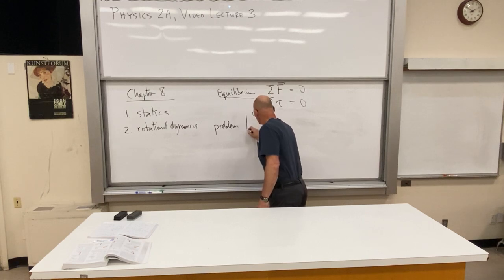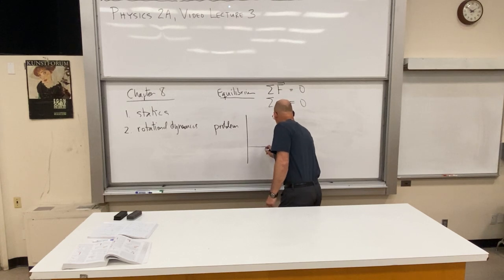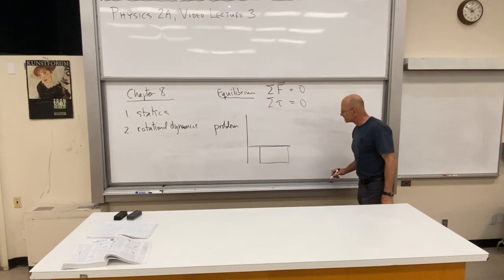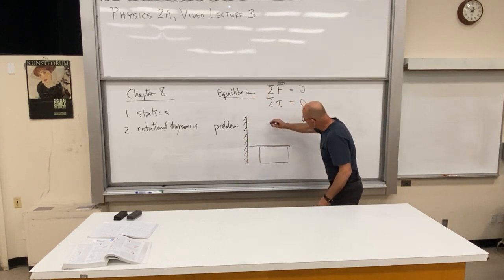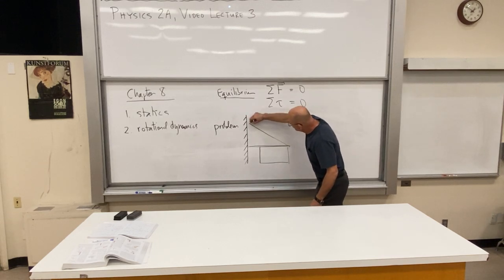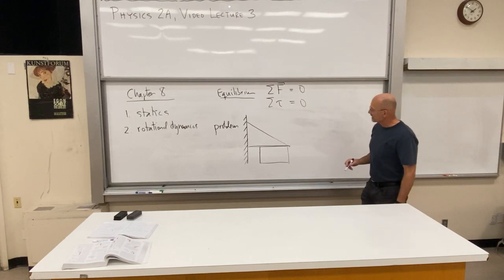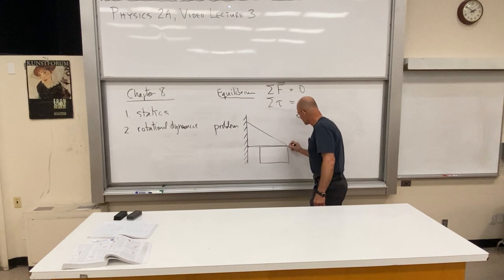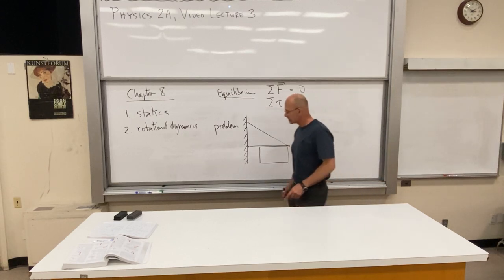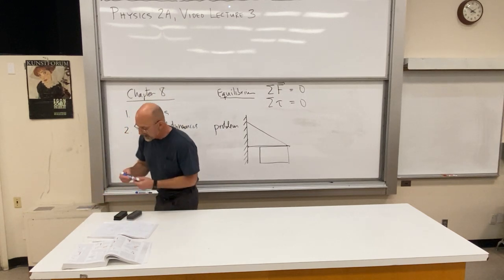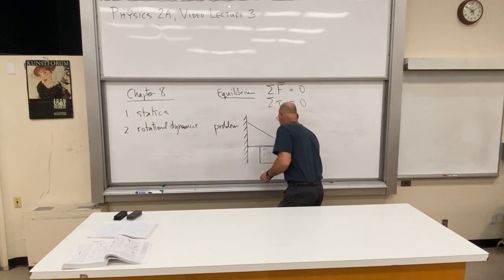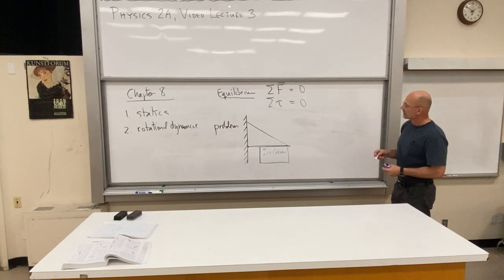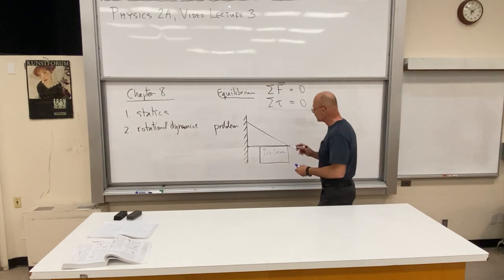There's the wall, there's a beam coming out, and there is a sign hanging from the end of the beam. In order that the beam not just twist and bend off — it's a structural problem — you have to attach a cable here. The book wasn't quite accurate but they did say we have the forces at the wall and the cable at the end of the beam. And it does say ice cream on it.